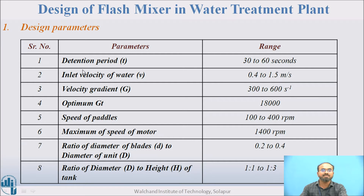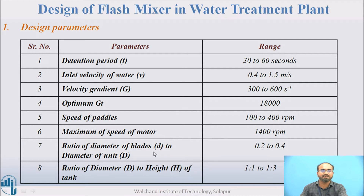For design parameters: the detention period is generally 30 to 60 seconds. Inlet velocity of water is typically kept between 0.4 to 1.5 meter per second. Velocity gradient, capital G, is generally kept between 300 to 600 per second. Optimum GT is always kept at 18,000. Speed of paddles varies from 100 to 400 RPM. Maximum speed of motor is generally kept at approximately 1400 RPM. The ratio of diameter of blades to diameter of the whole unit (small d to capital D) is kept between 0.2 to 0.4. The ratio of unit diameter to height of the tank (capital D to capital H) is kept between 1:1 to 1:3.